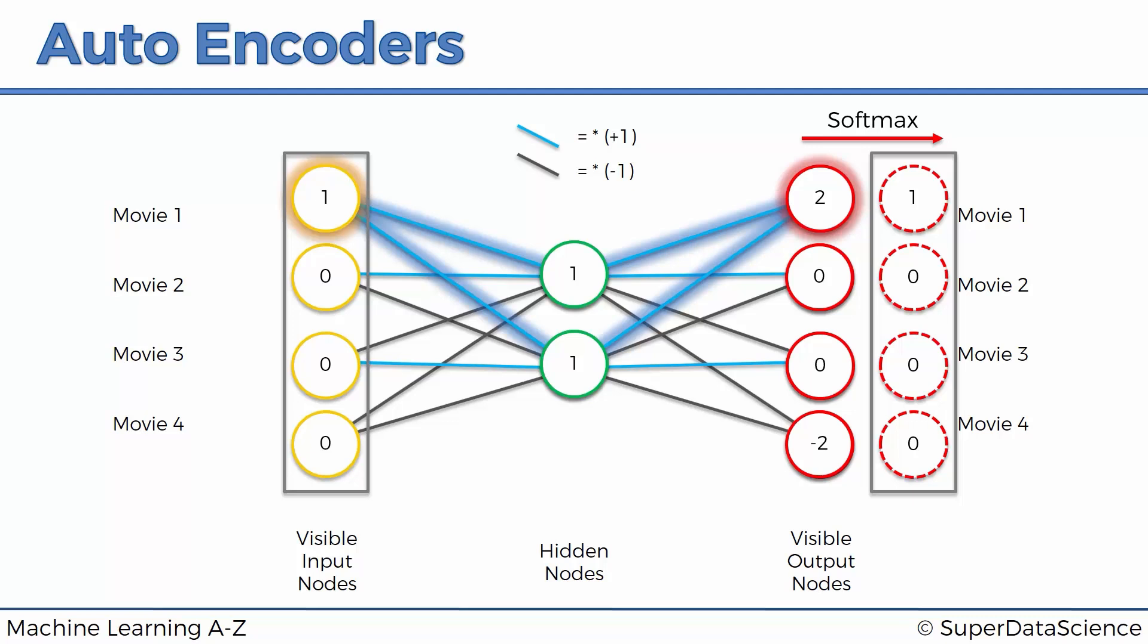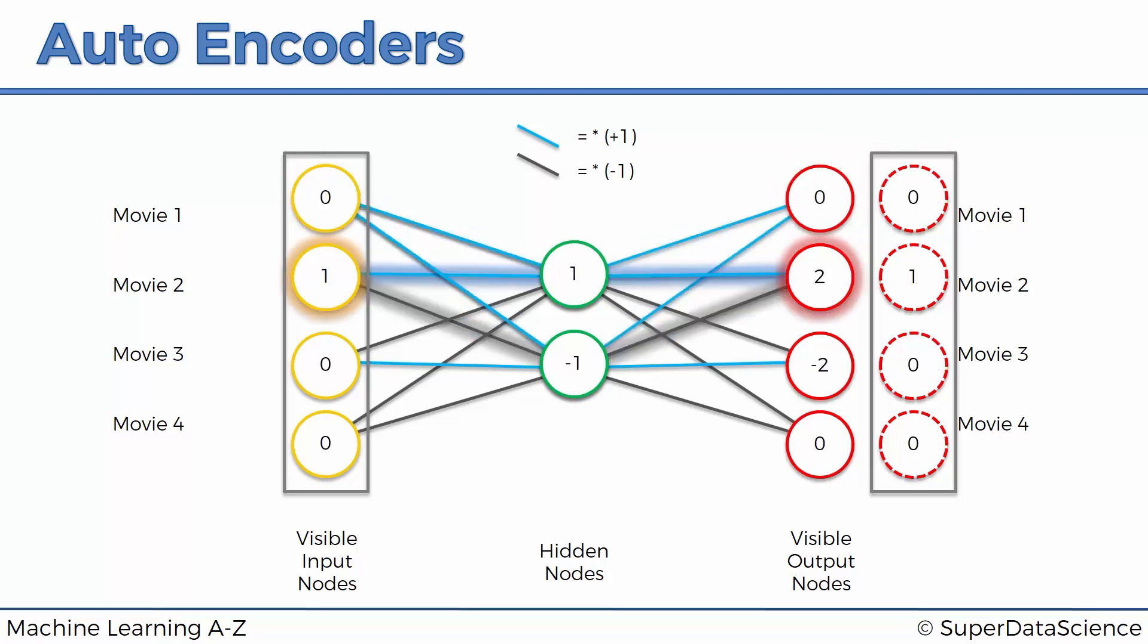Alright, so that's the start. Let's have a look at some other cases. We're not going to be as detailed. We're just going to look at the results. So if you input zero one zero zero you will see that you get a two over here. Zero two minus two zero and when you apply the softmax you get zero one zero zero. Again identical.